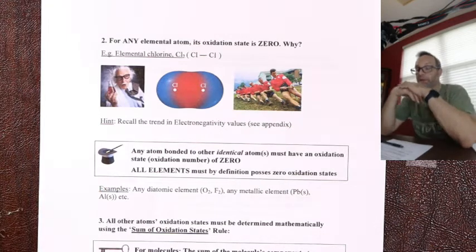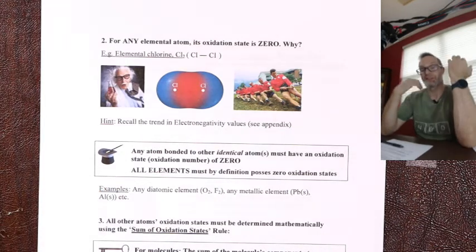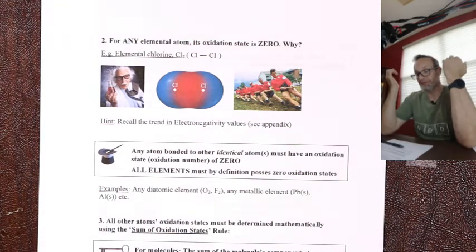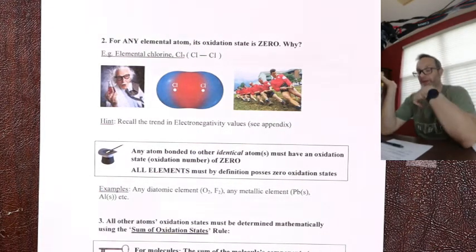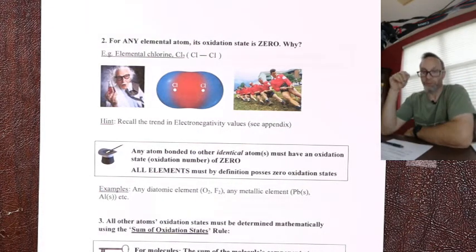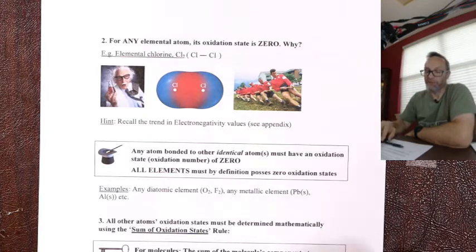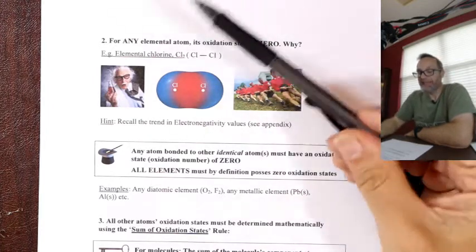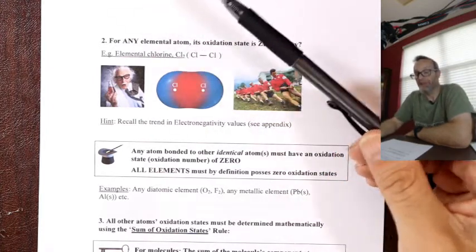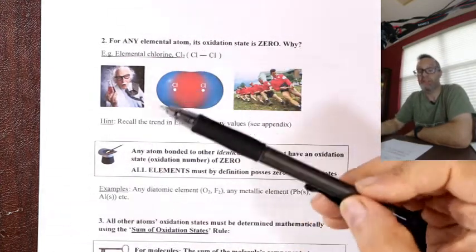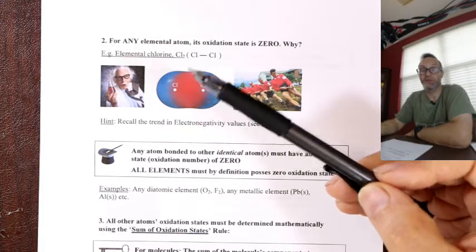In an ionic compound like Na⁺Cl⁻, one has a plus oxidation state, one has a minus, because an electron was transferred. But in any element, the oxidation state is by definition zero.